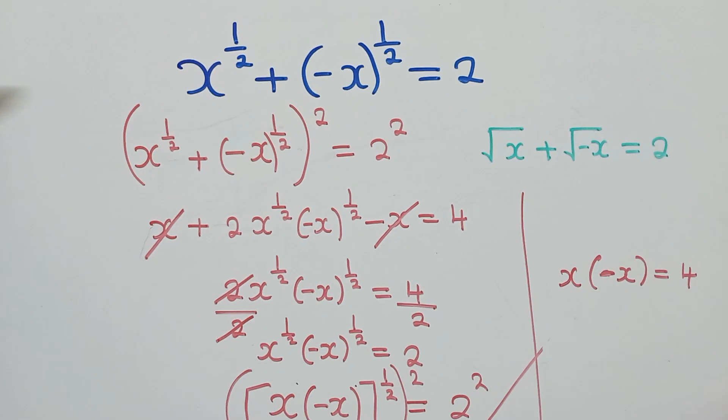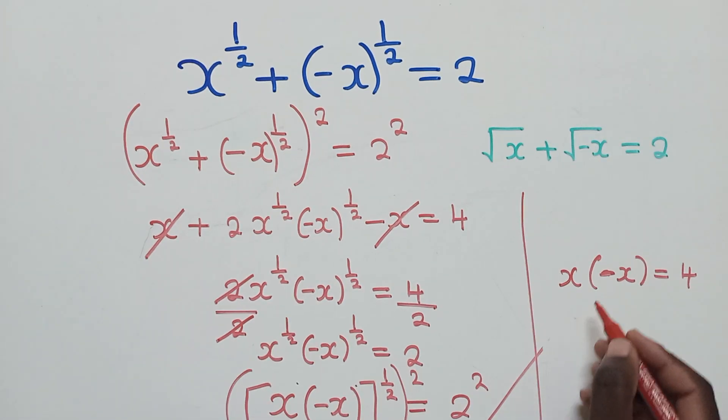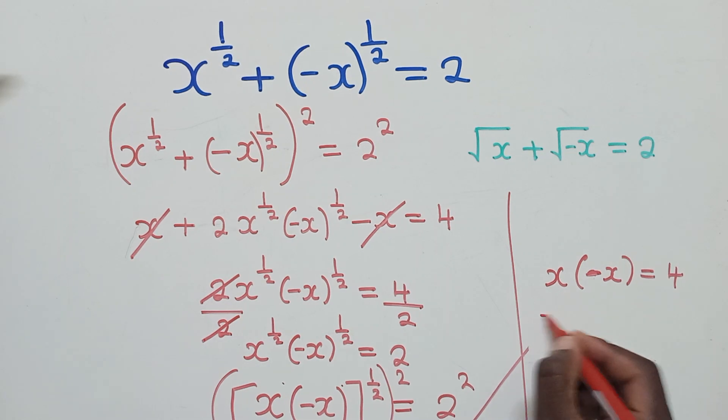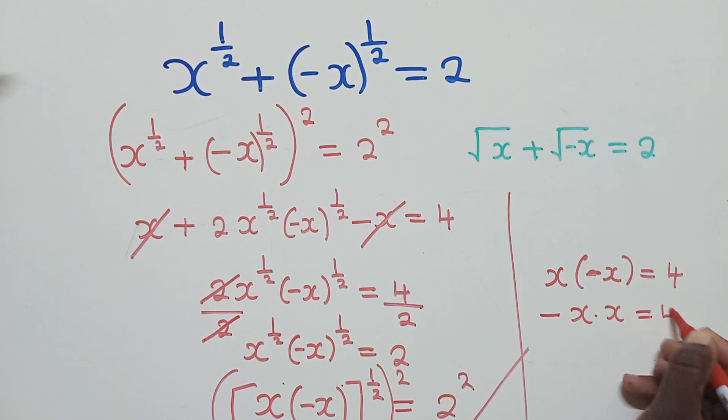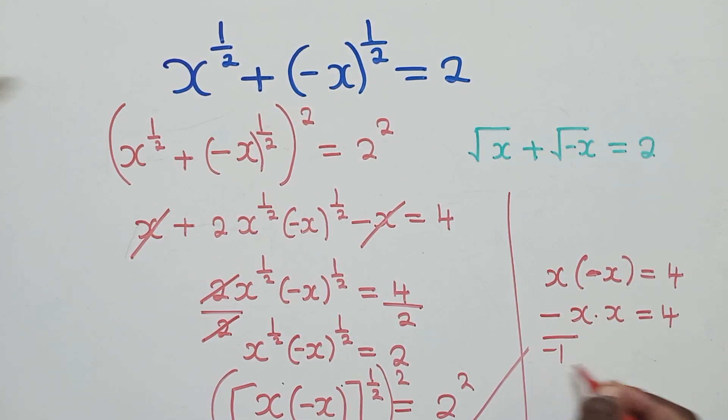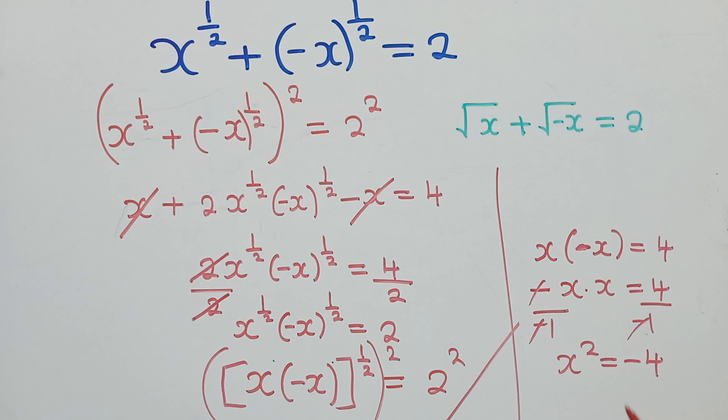I think now you can see that it's working now. It's working. Negative can be factored out. We shall remain with x times x there and the 4, we divide by negative 1 by negative 1. This side, it will cancel. We shall remain with x squared is equal to negative 4.